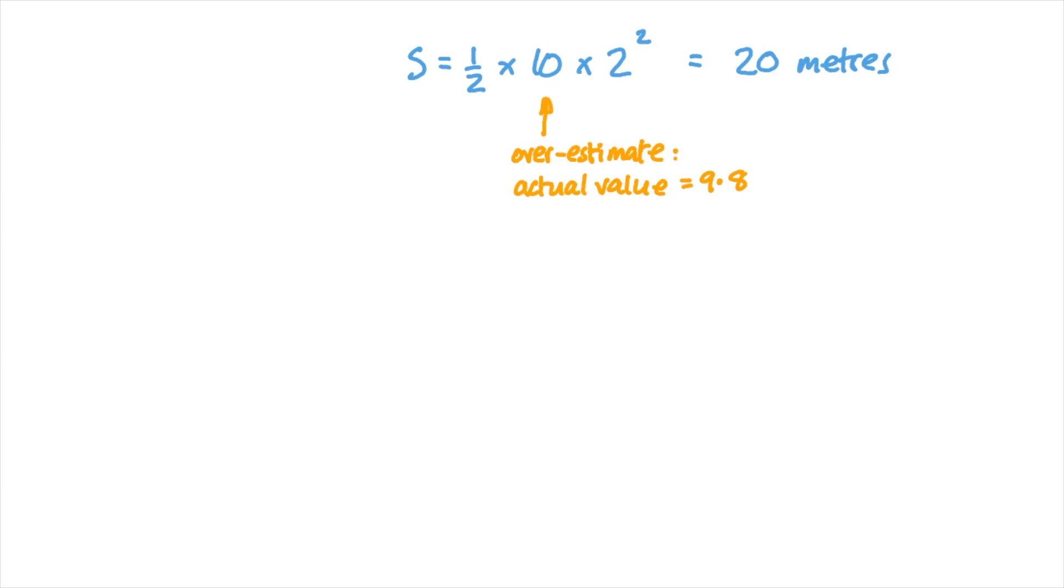I suggested that we'd slightly overestimated the height because we'd used a value of 10 meters per second per second for acceleration due to gravity rather than 9.8. Now a half times 9.8 times 2 squared was actually quite easy to work out in our heads. Multiplication is commutative and associative, so we could do a half times 2 squared first to get 2, and then multiply that by 9.8. This meant we were only 19.6 meters high. I'd saved us 40 centimeters. But they still weren't happy.